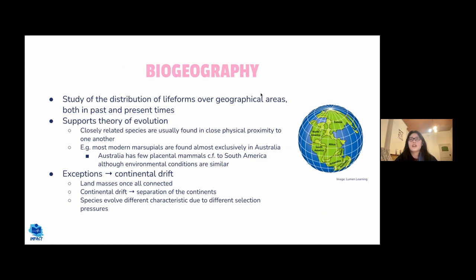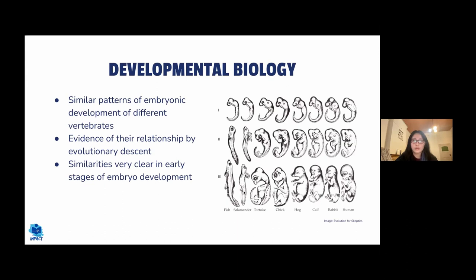Biogeography — the study of different life forms across geographical areas — provides evidence of evolution, as more closely related species tend to be found in closer proximity. Developmental biology also provides evidence for evolution: early developmental forms of different animals closely resemble each other, suggesting they share a common ancestor from which they have diverged over time.